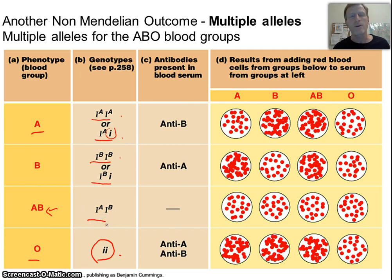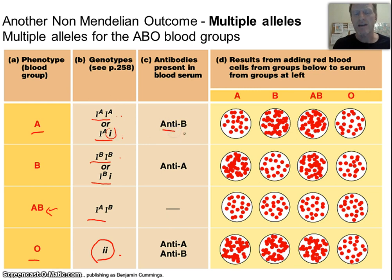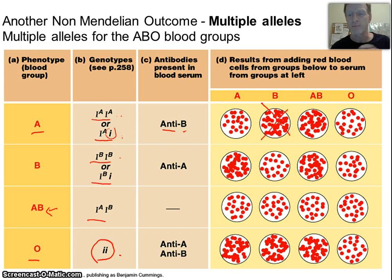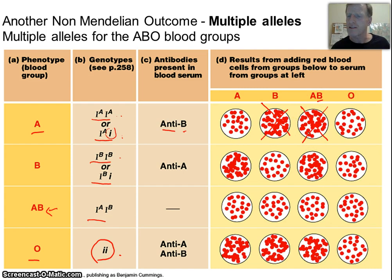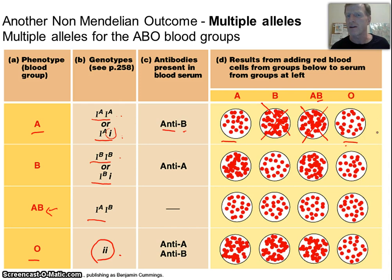Why is this important? If I have type A blood, my blood produces antibodies — that's what 'anti' stands for — that attack anything with the B protein. So if I take a transfusion from someone with type B, my body attacks those blood cells — they're coagulating and getting destroyed. If I take type AB blood, which also has the B protein, my body will reject that. I can take type A or type O, because someone with type O doesn't have any A or B proteins on their blood — so they're what we call the universal donor. They can give to anyone.